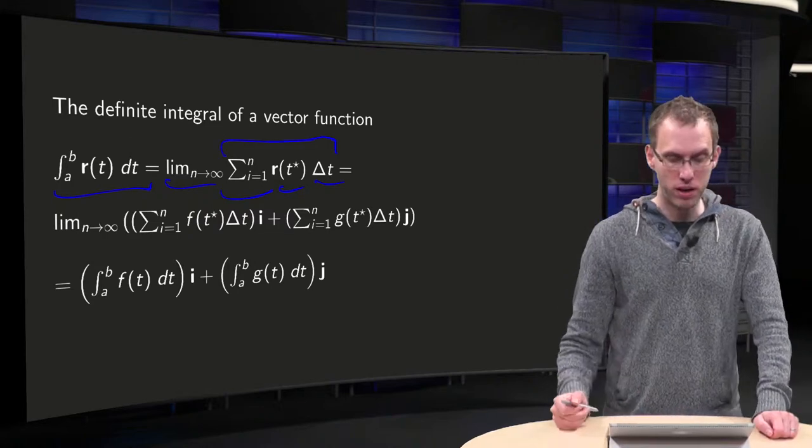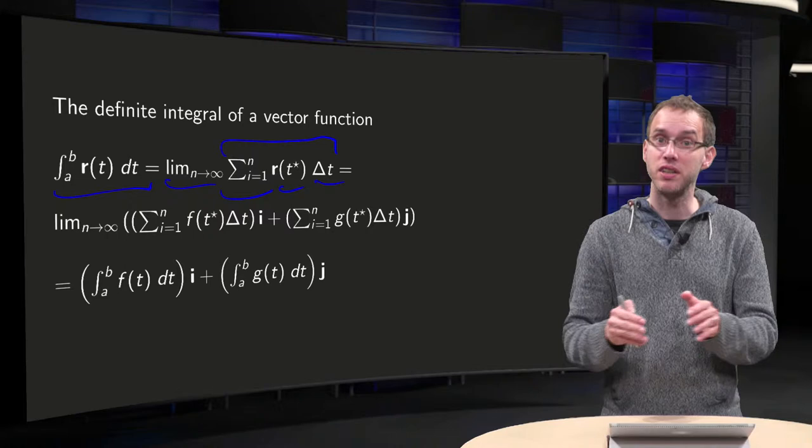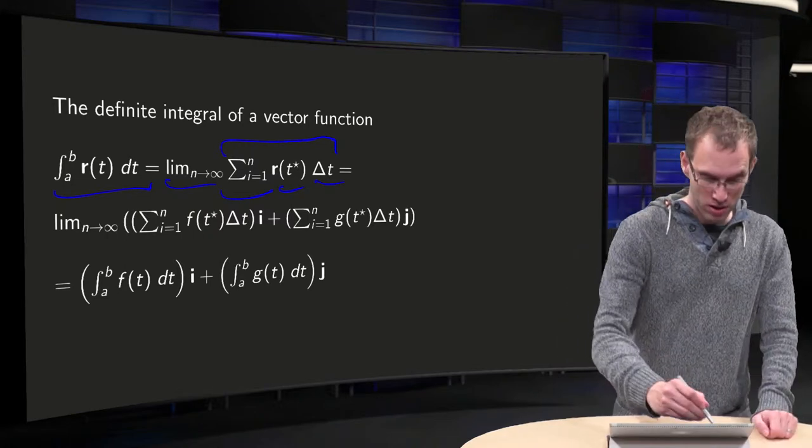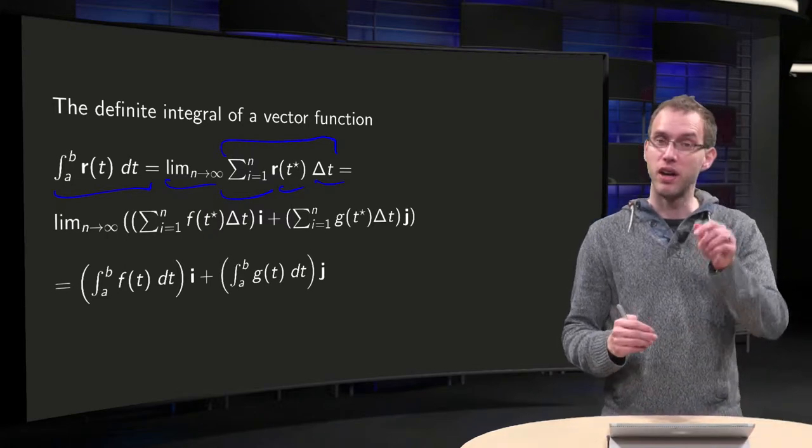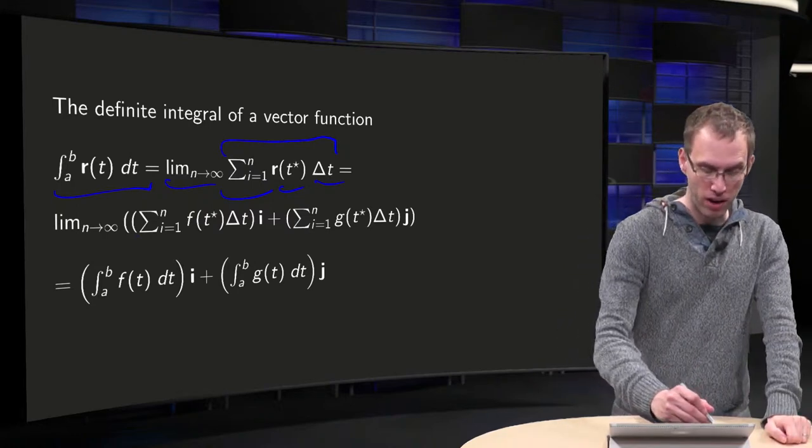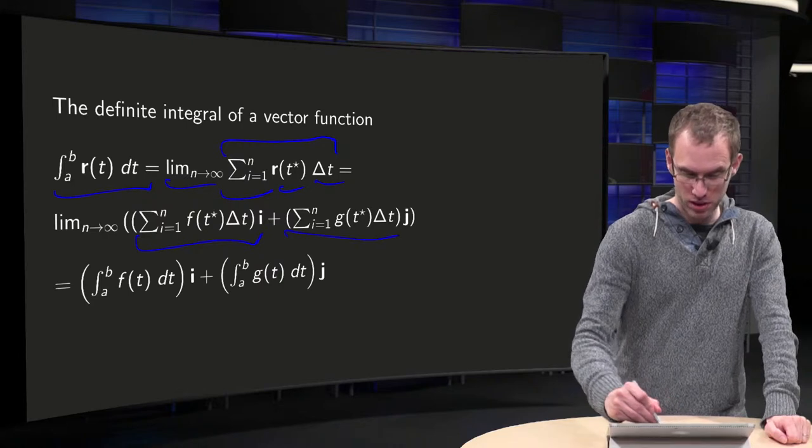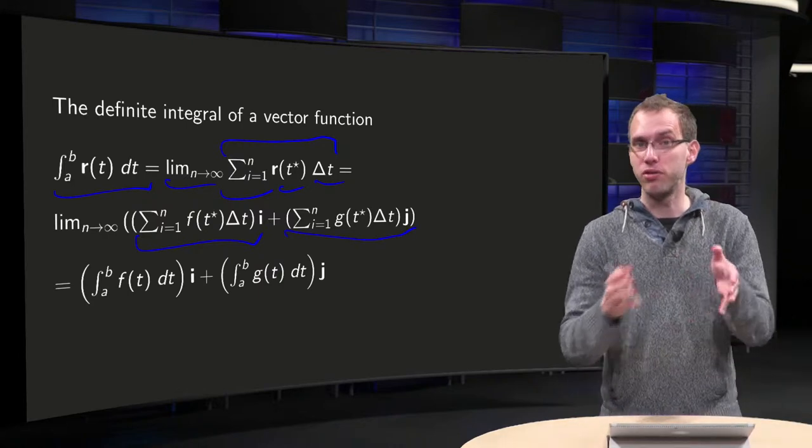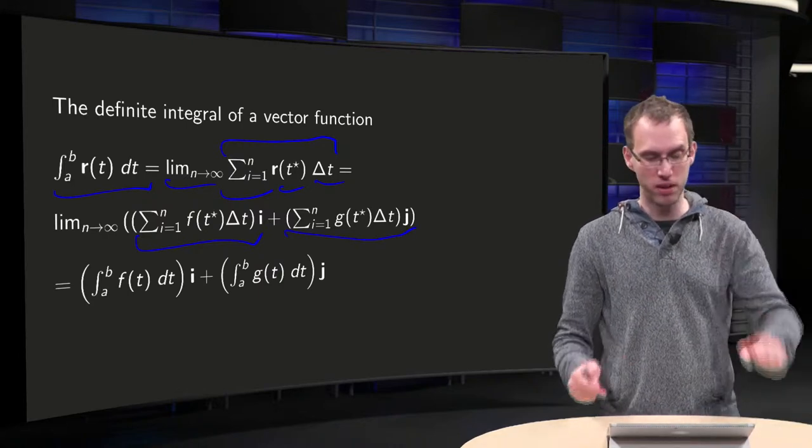Now, this part can be separated into components, so if you write r as f(t) times i plus g(t) times j, you will have the i component plus the j component. No problems for that because we just have a finite sum and we take the limit after that.